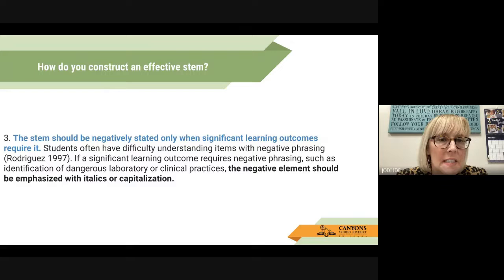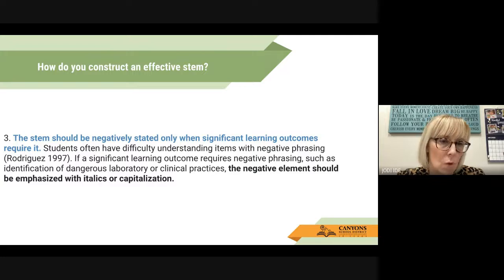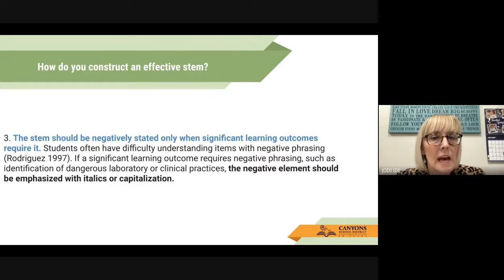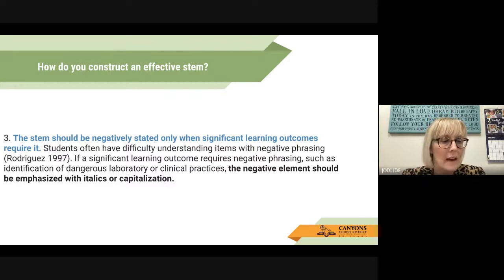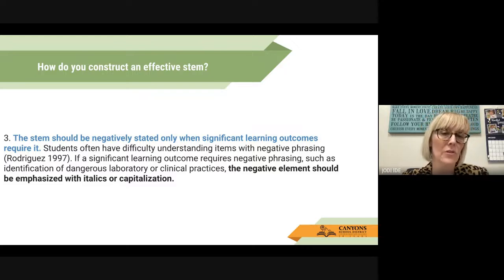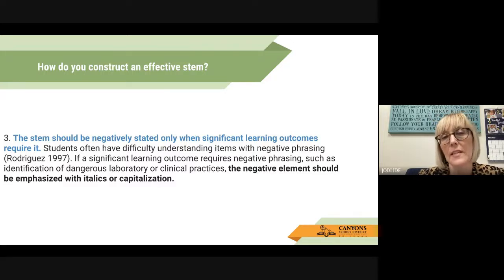Three: the stem should be negatively stated only when significant learning outcomes require it. Students often have difficulty understanding items with negative phrasing. If a significant learning outcome requires negative phrasing, such as identification of dangerous laboratory or clinical practices, the negative element should be emphasized with italics or capitalization. AP tests often use negatively stated questions, so sometimes you need to provide students with learning opportunities to be familiar with those. But according to this source, that may not be the best type of stem to create.